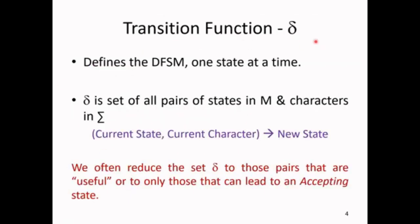Transition function delta defines the DFSM one state at a time. Delta is a set of all pairs of states in M and characters or symbols in summation. Transition function is represented by the current state, the current input symbol or a character going to or leading to the next state or a new state.